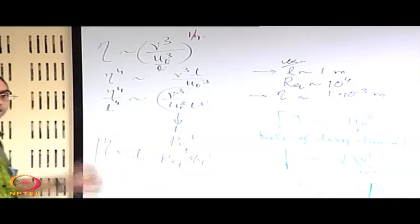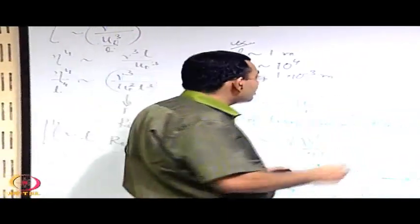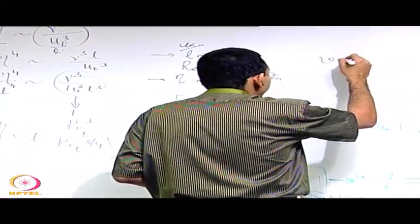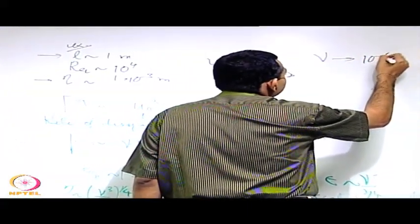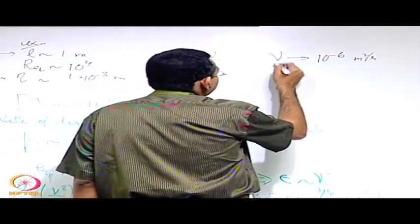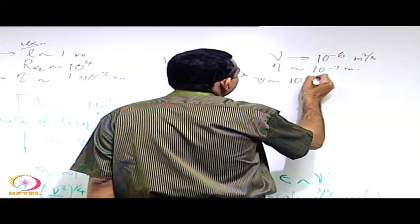Now consider the time scales and the velocity scales. The velocity scale in the smallest eddy is of the order of nu divided by eta, from the Reynolds number scale equal to 1. The kinematic viscosity is roughly 10 to the power minus 6 meter squared per second for water — that is mu by rho, 10 to the power minus 3 divided by 10 to the power 3. Taking eta as 10 to the power minus 3 meters, you get a velocity V of the order of 10 to the power minus 3 meters per second. These are small velocities.